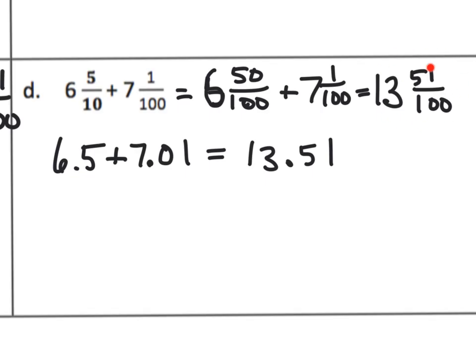So the decimal answer is thirteen point five one. I looked over and confirmed the answer is thirteen and fifty-one hundredths. Parents and teachers, that's perfectly okay. We don't need to tell students to line up the decimals and add. We really want students to gradually have it make sense to them on their own, and eventually they will have that standard algorithm under their belt.